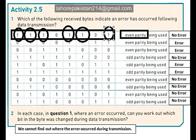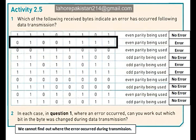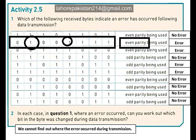Now let's look at part B, in which you are supposed to have even parity. Let's count the number of ones in part B: 1, 2, 3, 4, 5. So 5 is not even — it is an odd number — which means there is some error that has occurred during transmission.